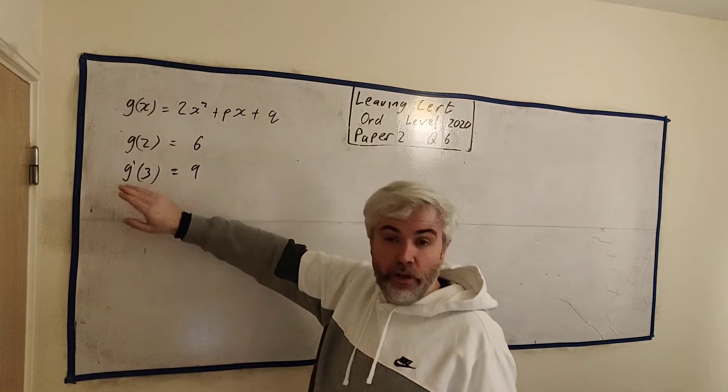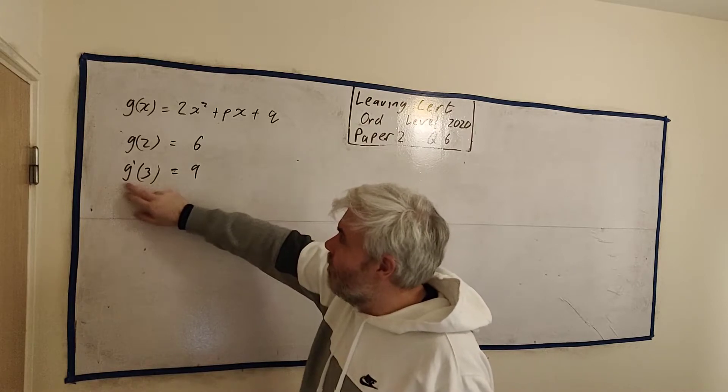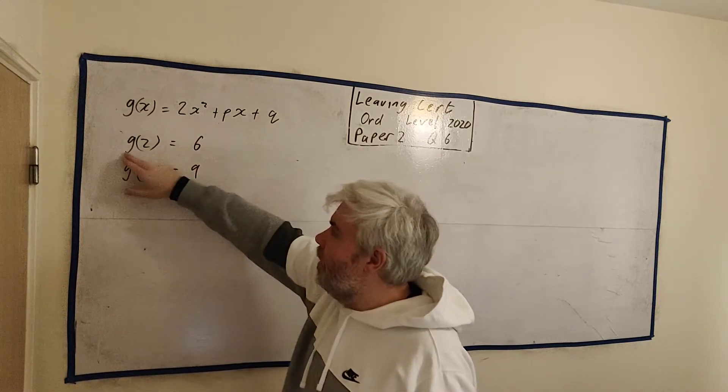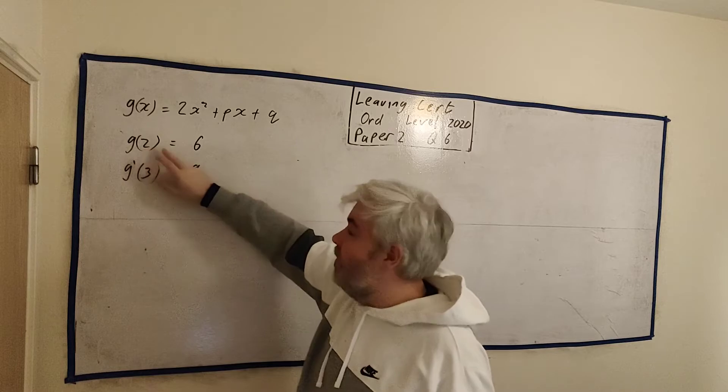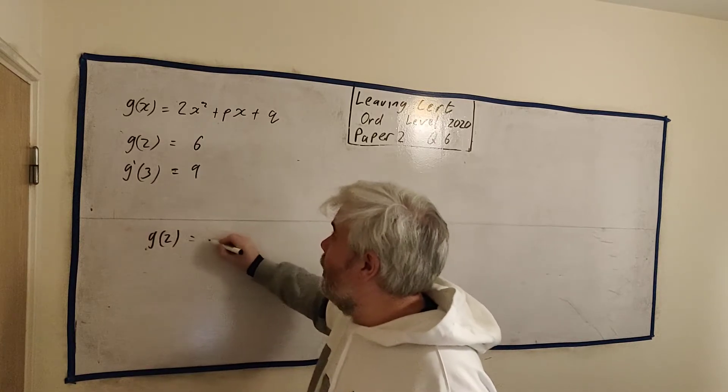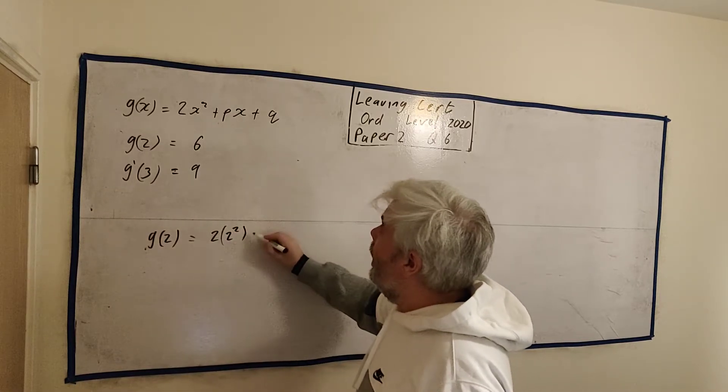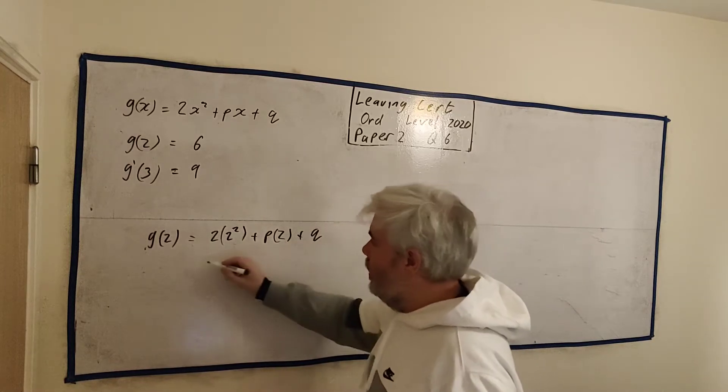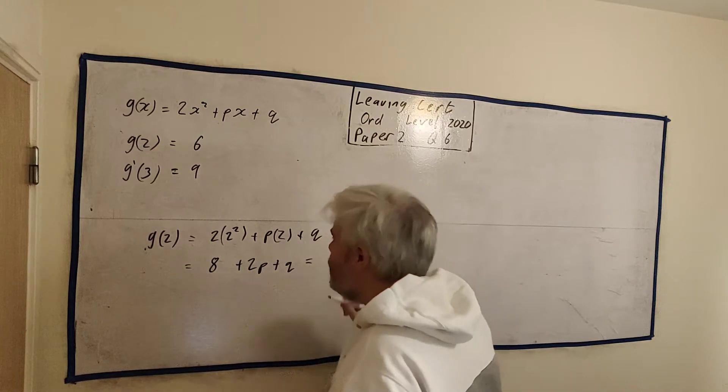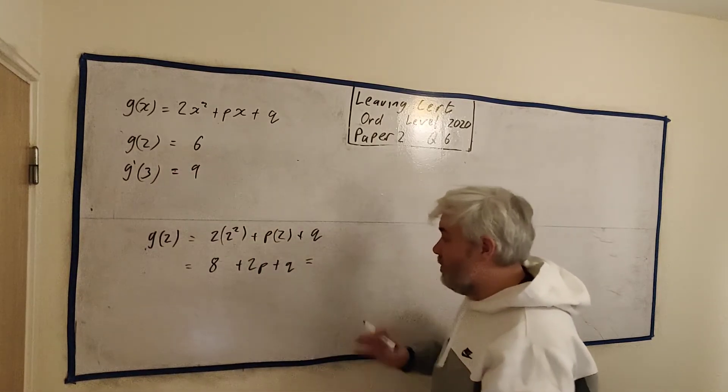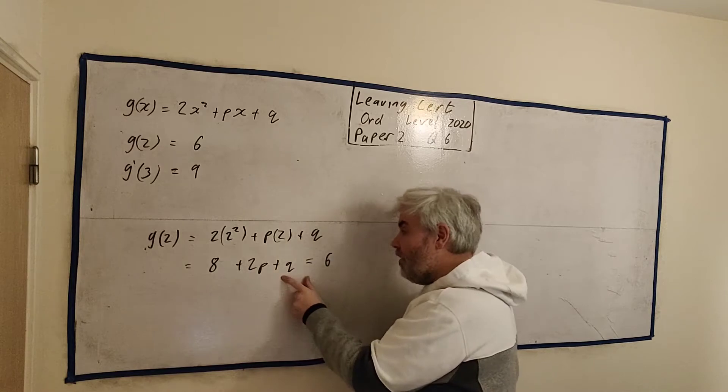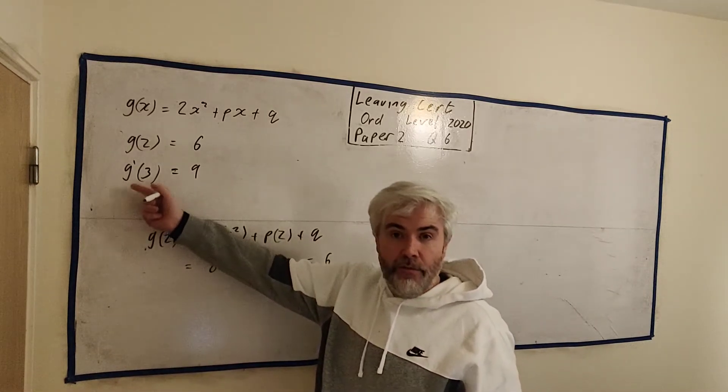One of the pieces of information is the derivative. So what this is saying is the derivative of g, when I put 3 into it, is equal to 9. Let me show you what I mean with this line here. This is telling me g, when I put 2 into it, is equal to 6. Well, here's g. When I put 2 into it, I get 2 times 2² plus p times 2 plus q. Or to clean this up, this will come out as 8 + 2p + q. And that must equal 6. So now we have a nice simple equation. But unfortunately, there's too much in it. p and q is only one equation.